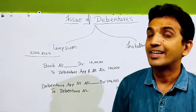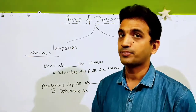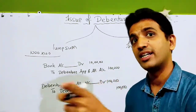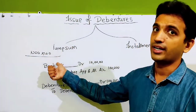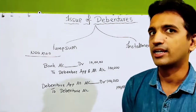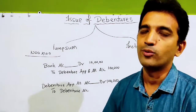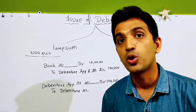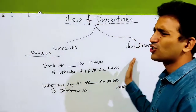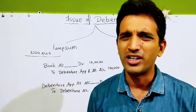Debenture वाले chapter में हमेशा ध्यान रखें कि आप lump sum method ही करेंगे, इसलिए यह दोनों entries हमेशा ध्यान रखें. आगे के part में advance चीज़ें आएंगी. एक बात हमेशा ध्यान रखना — जिस दिन debenture issue कर दिया, उसी दिन उसे वापस करने की तैयारी हो जाती है. इसलिए उन पैसों का बंदोबस्त पहले से करके रख लो.